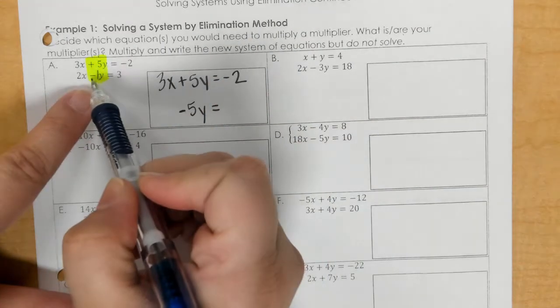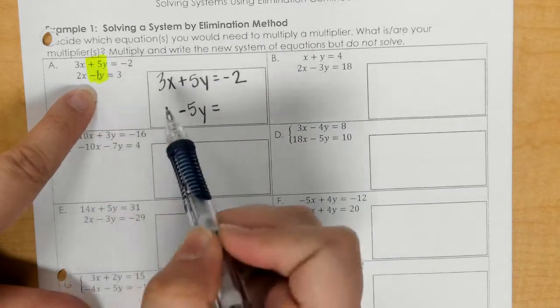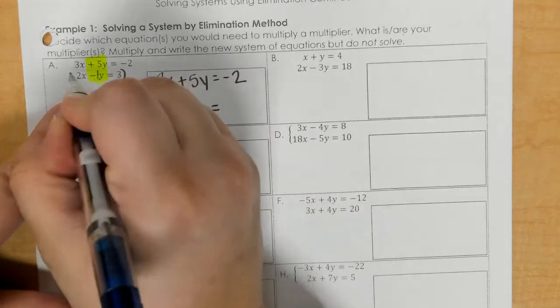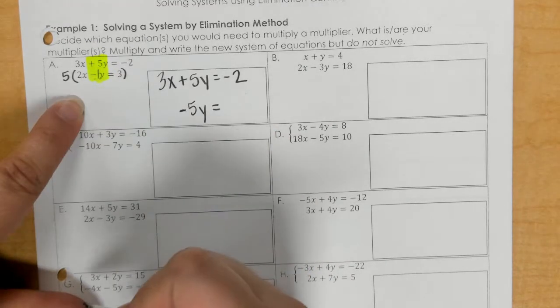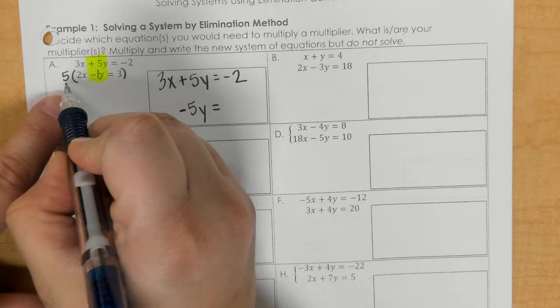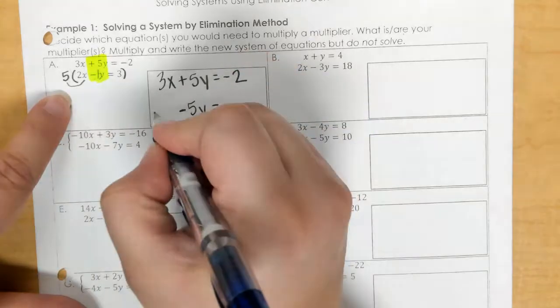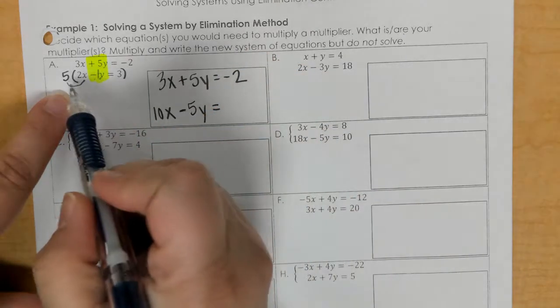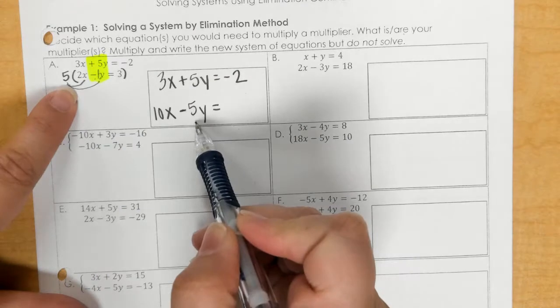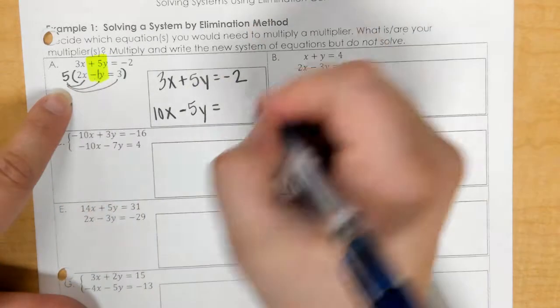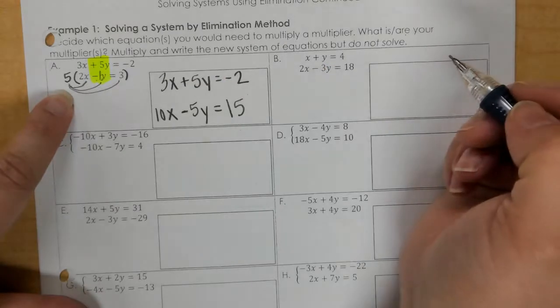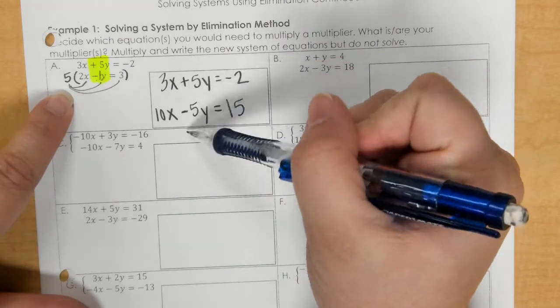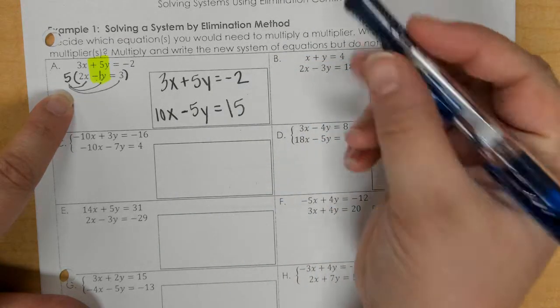So what times negative 1 is negative 5? In this case it would be 5. So I take the 5 and multiply it to 2x. 5 times negative 1 is negative 5y, and 5 times 3 is 15. Now you should be able to eliminate and solve if you had to solve.